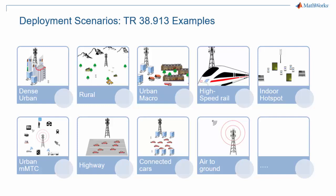Possible deployment scenarios are listed in Technical Report 38.913. Contrary to what people naturally think of when hearing about 5G, not all scenarios are high-speed small cells, as you can see here. Scenarios range from indoor to rural, with urban cells, air-to-ground, and connected cars as potential applications.